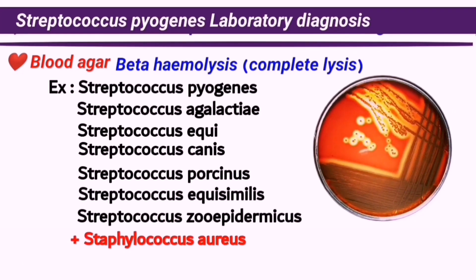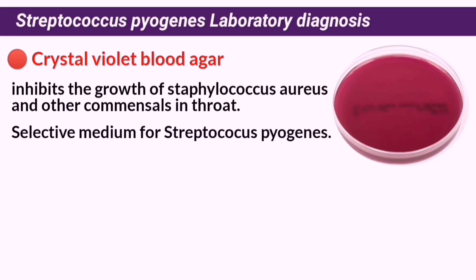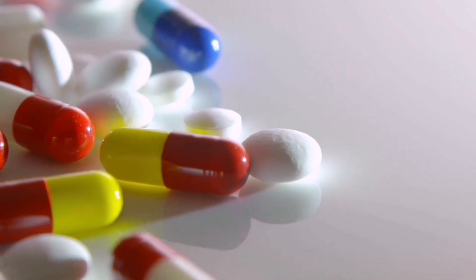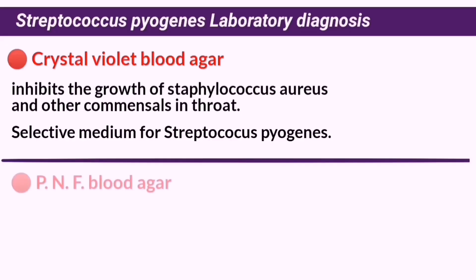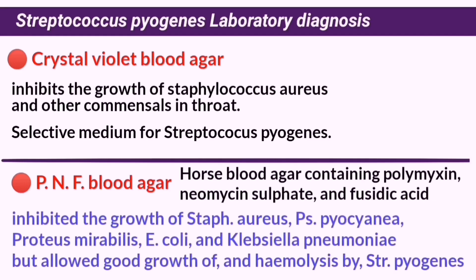As previously mentioned, growth on blood agar alone is not sufficient to confirm the diagnosis of S. pyogenes. To give a greater level of specificity, crystal violet can be added into the blood agar to inhibit the growth of other species. Crystal violet blood agar is a selective media for S. pyogenes, especially when specimens have been taken from a throat swab. The same idea can be applied by adding specific antibiotics that will inhibit the growth of any other gram-positive or gram-negative bacteria other than S. pyogenes. For example, polymyxin neomycin fucidic acid blood agar, or PNF blood agar, which incorporates those antibiotics into horse blood agar to form a more selective media.